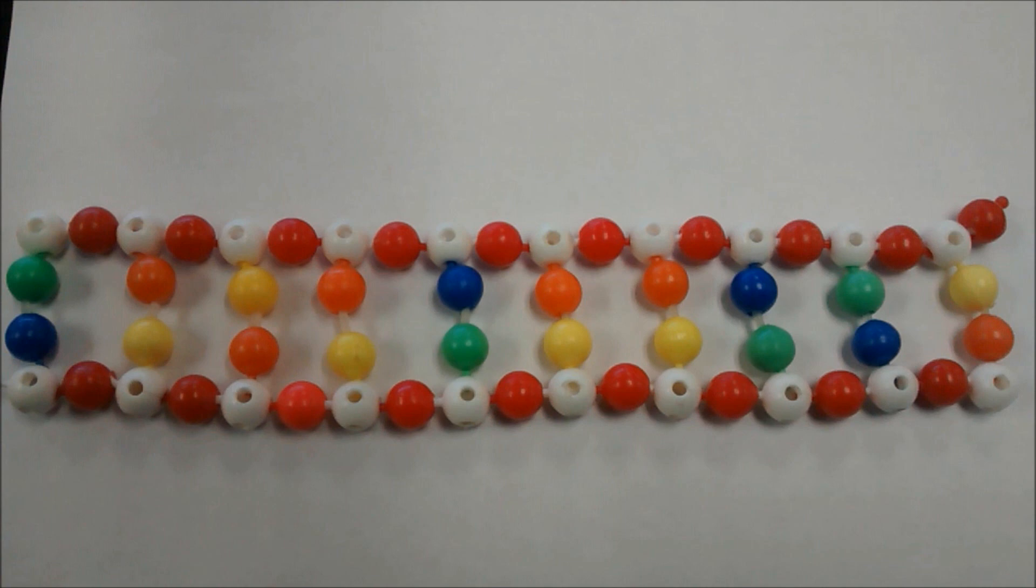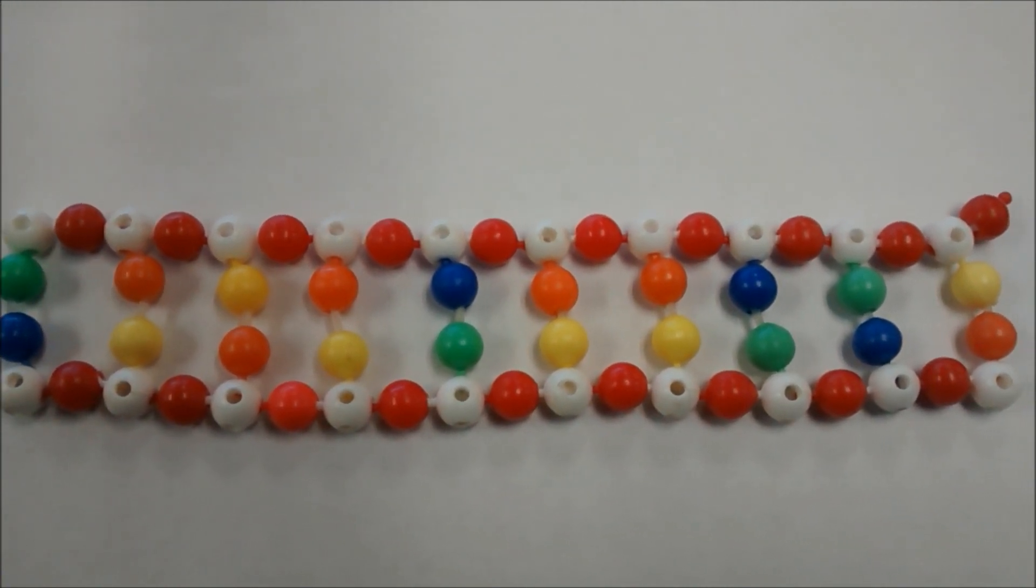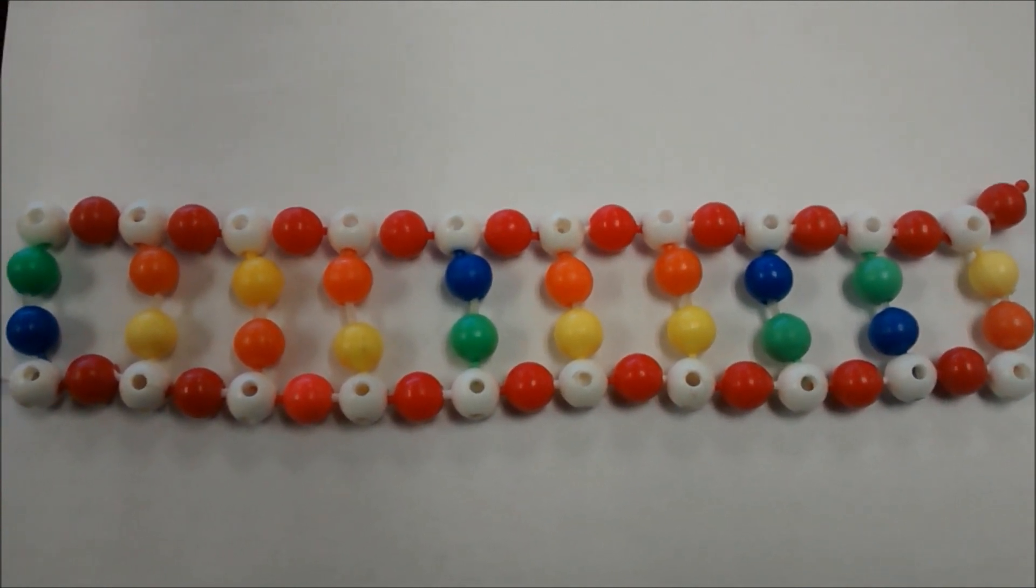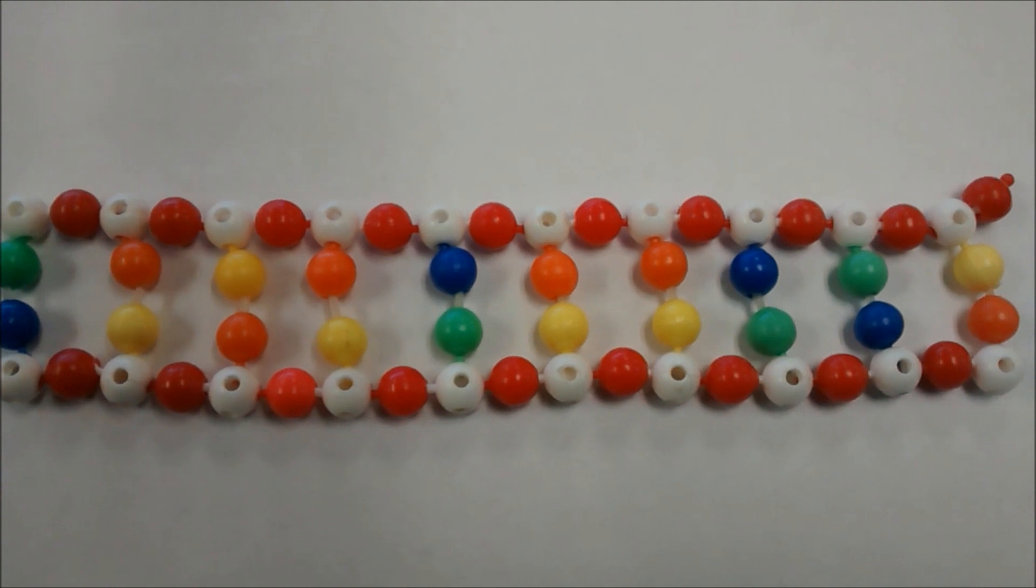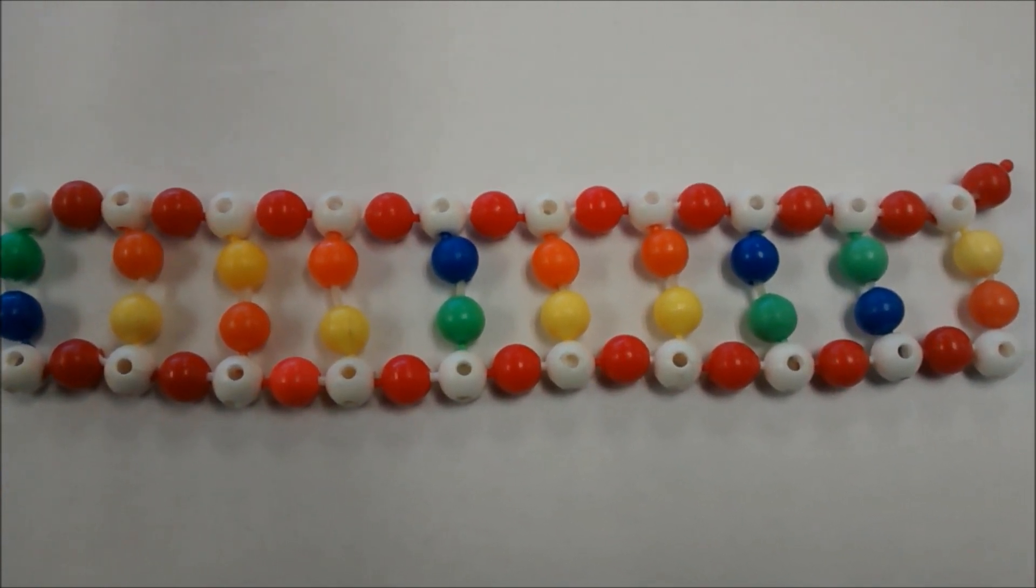These are the pop beads that we use in lab. So I'm just going to go over what's what here. The reds and the whites represent the phosphates and the sugars, and then the colorful ones in the middle represent the bases. You can see that there is some pairing with the blue and the green pairing and the orange and the yellow pairing.